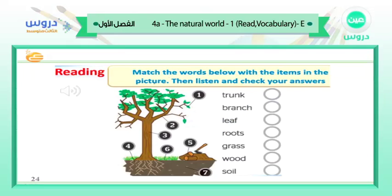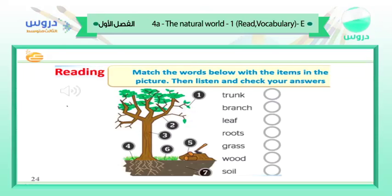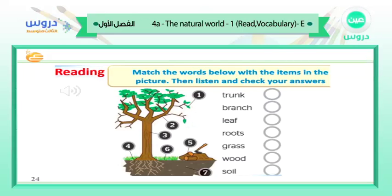Match the words below with the items in the picture, then listen and check your answer. You have: trunk, branch, leaf, roots, grass, wood, and soil. Look at the picture and match them with the suitable words. Now let's listen to the answers. One: leaf. Two: branch. Three: trunk. Four: roots. Five: wood. Six: grass. Seven: soil.